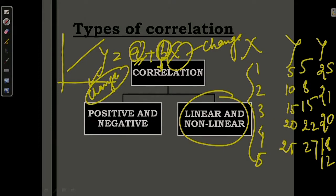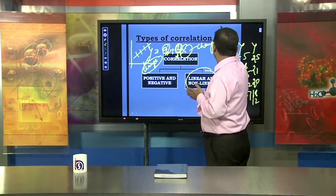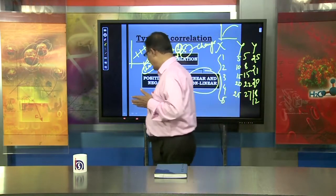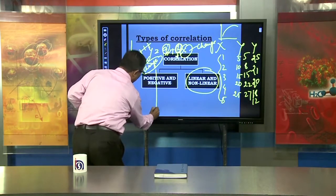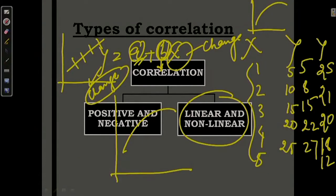In the case of non-linear correlation, what happens is that the rate of change is not constant — it keeps changing. So when you plot the curve on a graph, the x and y variables do not follow a straight line but instead make a curve. Non-linear correlation follows a curved path rather than a straight line.